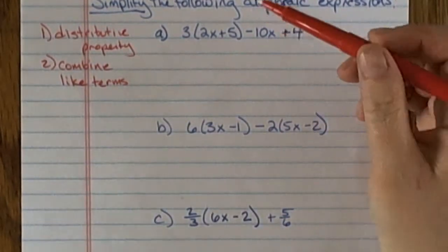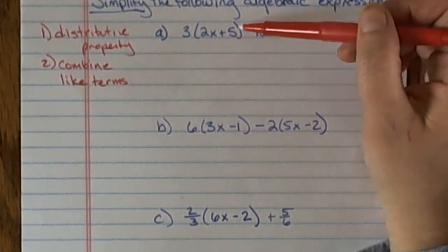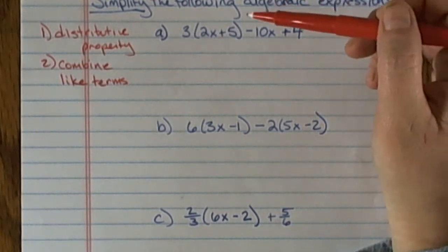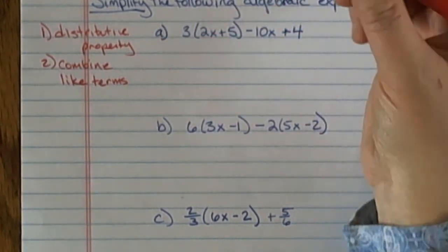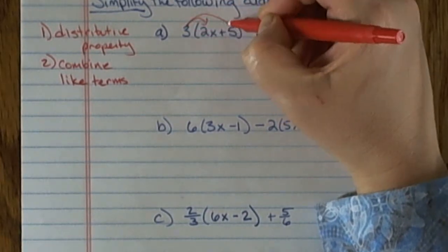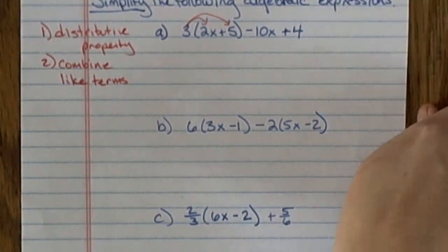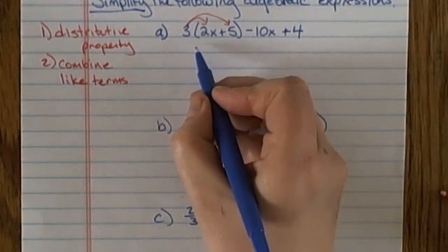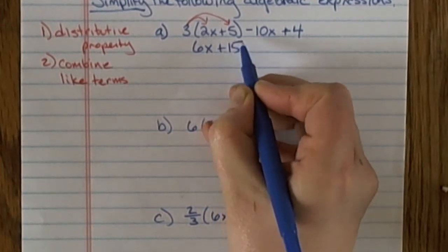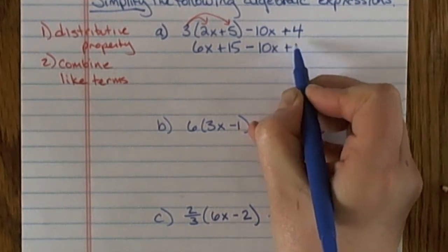Looking at this first problem, I see that inside the parentheses 2x plus 5 are not like terms. So the first thing I can do to make this simpler is apply the distributive property. The 3 is going to distribute through and multiply 3 times 2x and 3 times 5. So I get 3 times 2x or 6x plus 15, and then I still have minus 10x plus 4.